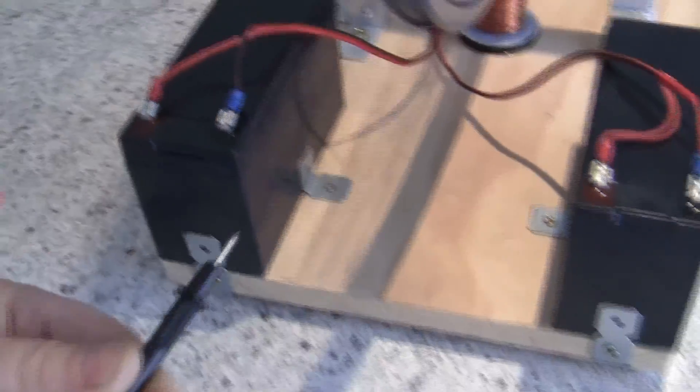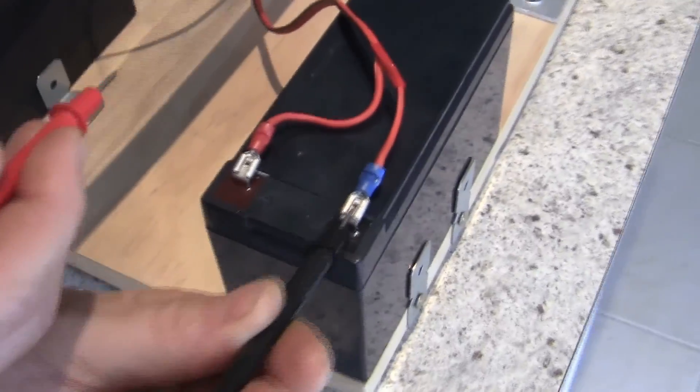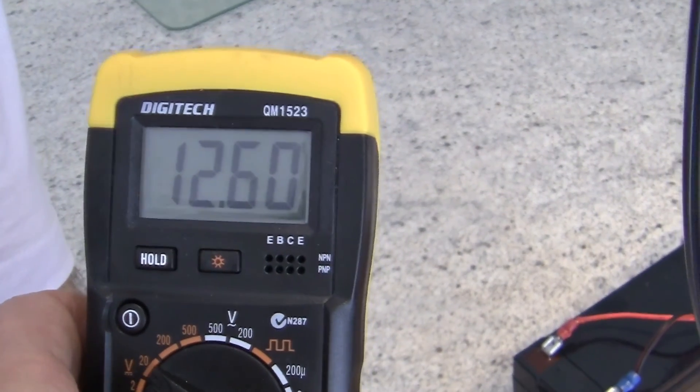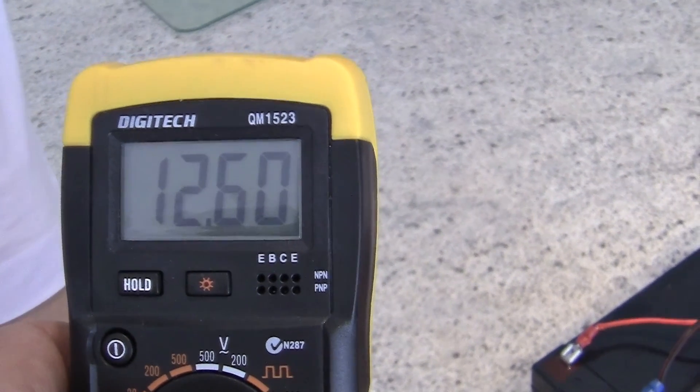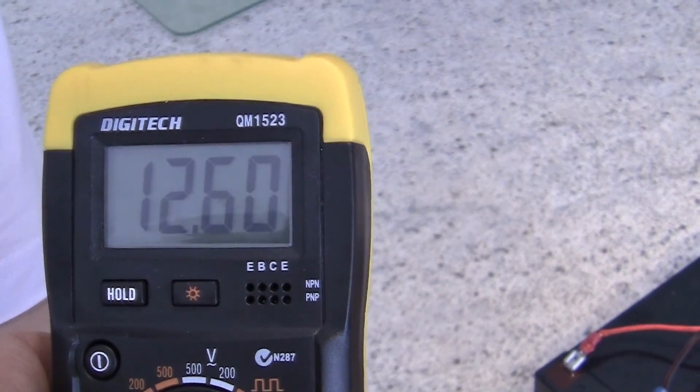So if we swap over to the charge battery, now what did this battery start off at? This was about 11.9. It started off 11.9 yesterday I think it was. Yesterday and now we're up to 12.6.